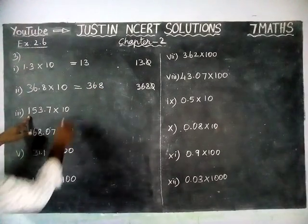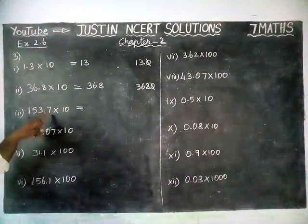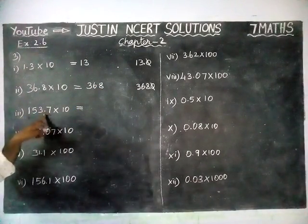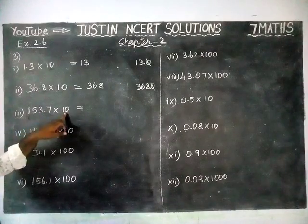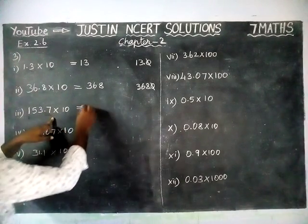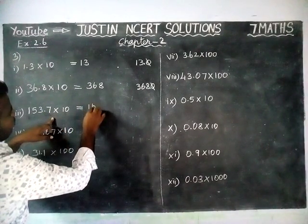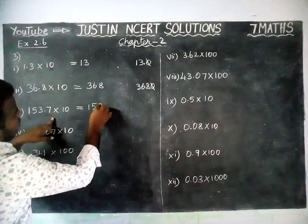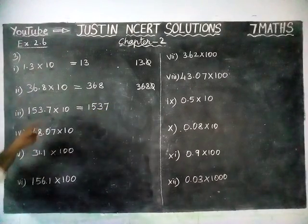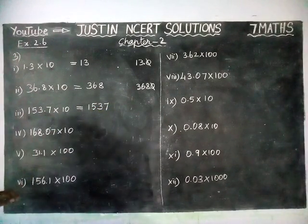The next question is the same case — only one decimal point — so we are going to move right side one step. So the answer is 1537. Here also, the zero is cancelled.